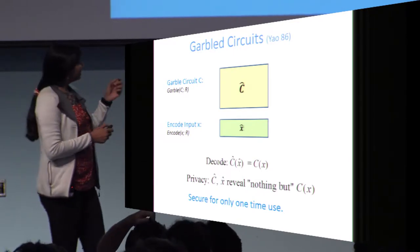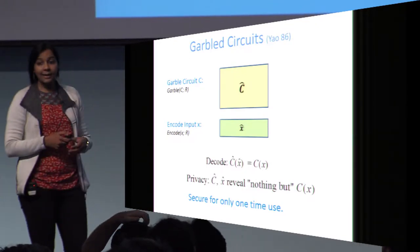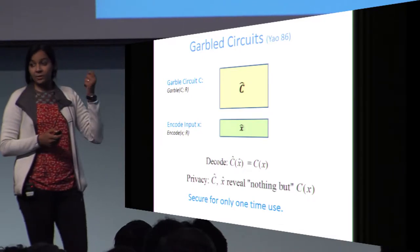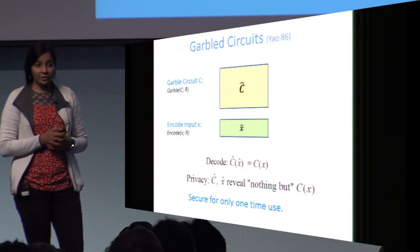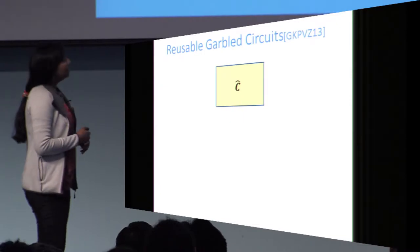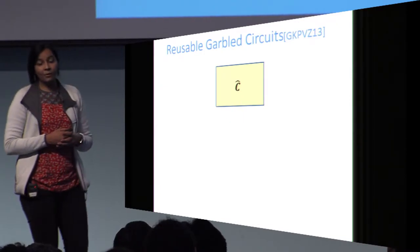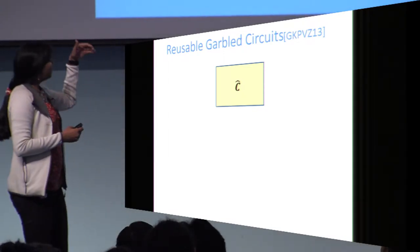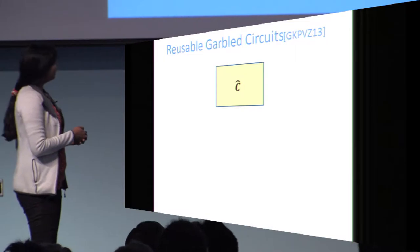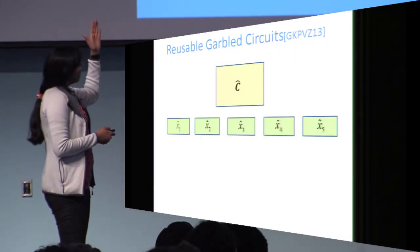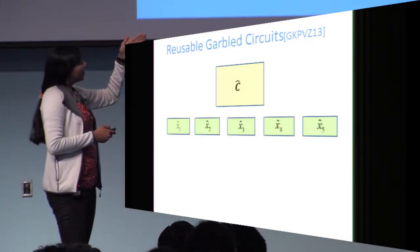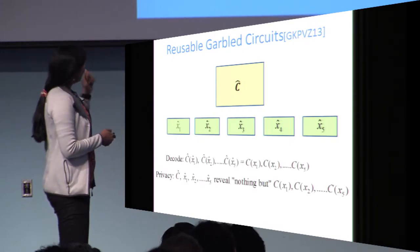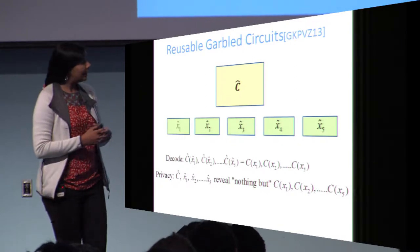If you have a garbled circuit C-hat, you can only evaluate a single input on it. If you try to run this circuit on two different inputs, security is broken completely. A natural question is whether you can have reusability for garbled circuits — is it possible to have a garbled circuit C-hat with a mechanism to encode many different inputs such that the decoding and privacy properties can be generalized.